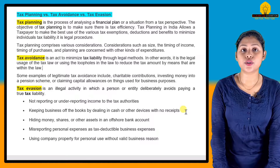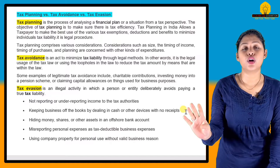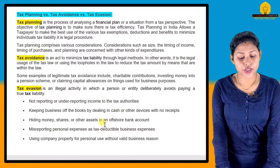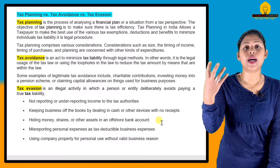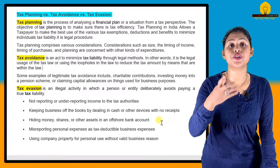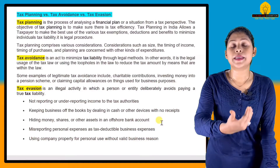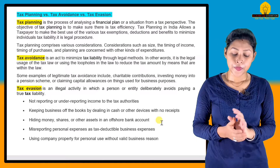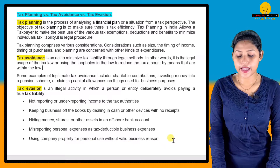Examples of tax evasion include: not reporting or under-reporting income to tax authorities; keeping business transactions off the books by dealing in cash with no receipts; hiding money, shares, and other assets in secret bank accounts; or using company property for personal use without a valid business reason.